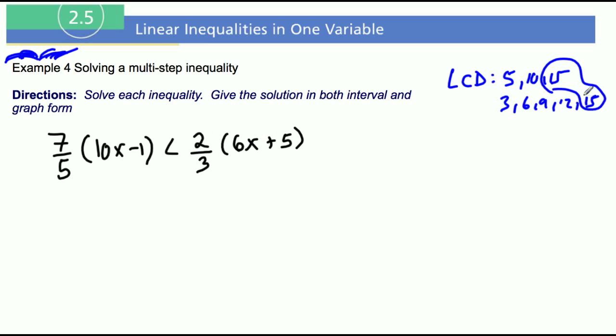So that means that if we multiply both sides by 15, the denominators will cancel out here. So I'm gonna multiply the entire left side by 15, I'm gonna multiply the entire right side by 15, and watch what happens here.